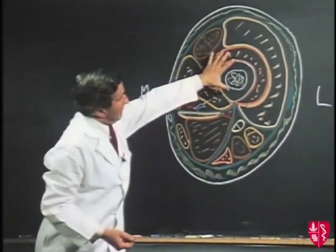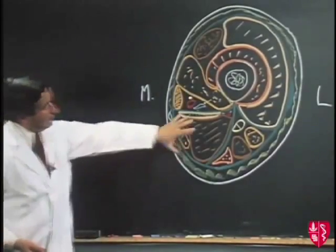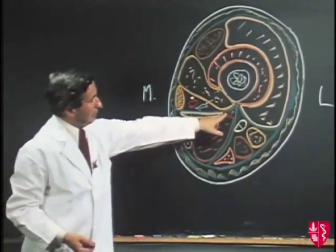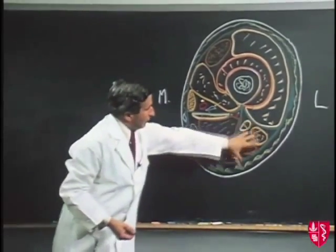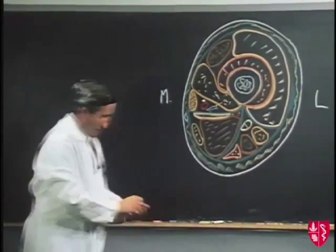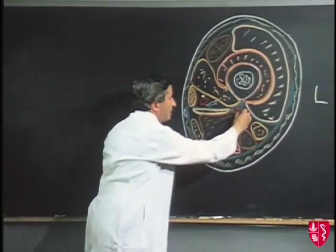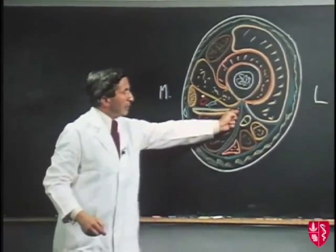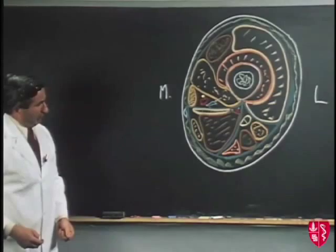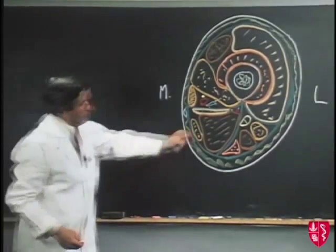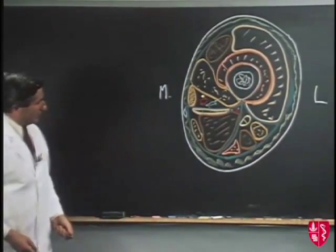The blood supply to the anterior compartment is from the femoral artery; the blood supply to the adductor compartment is from the profunda artery; and the blood supply of the posterior compartment is from perforating arteries going through from the profunda artery. We also have, higher up in this compartment, the inferior gluteal artery.